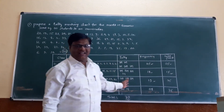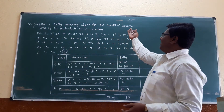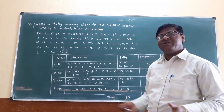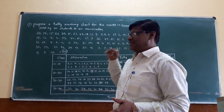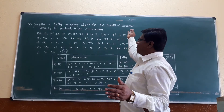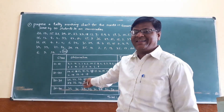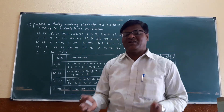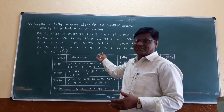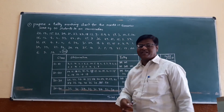This is the tally marking chart for the marks in Economics scored by 70 students in an examination. Study well, remember, and learn how to make a tally marking chart for Economics marks scored by 70 students.